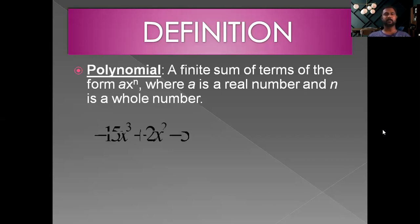Consider this example: minus 15x cube plus 2x square minus 5. The powers of x are 3 for the first term, 2 for the second term, and 0 for the third term since there is no x. All the powers are whole numbers, therefore this represents a polynomial.